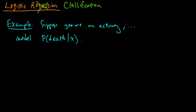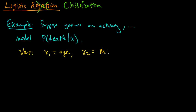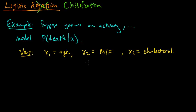So this is a very happy example. Let's say the variables X tell you three things: X1 is the age of a person, X2 is whether they are male or female, and X3 is the cholesterol level of the person — that should be a good indicator. You want to find a very simple model with as few parameters as possible.